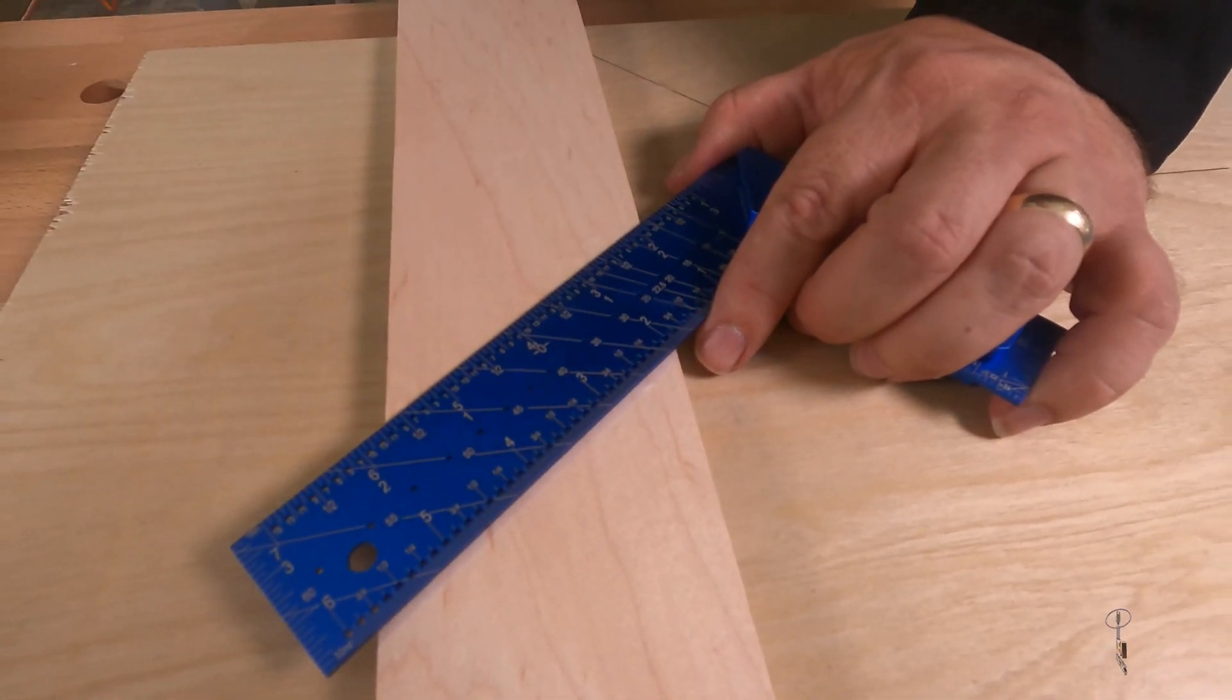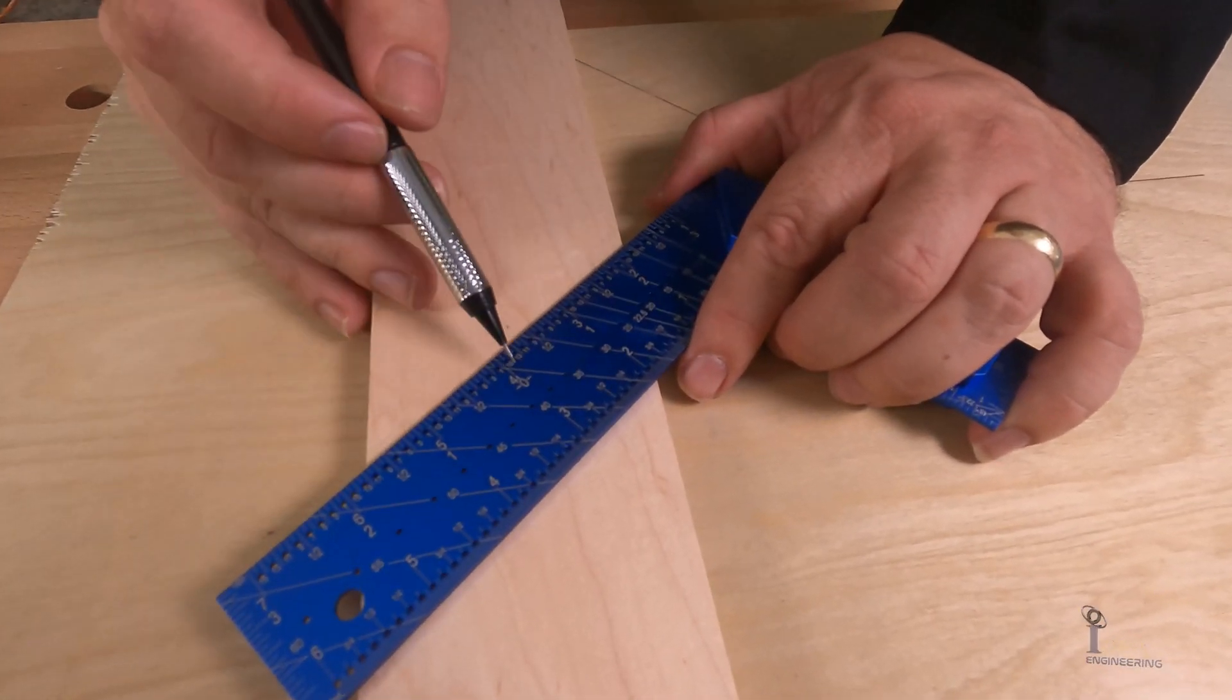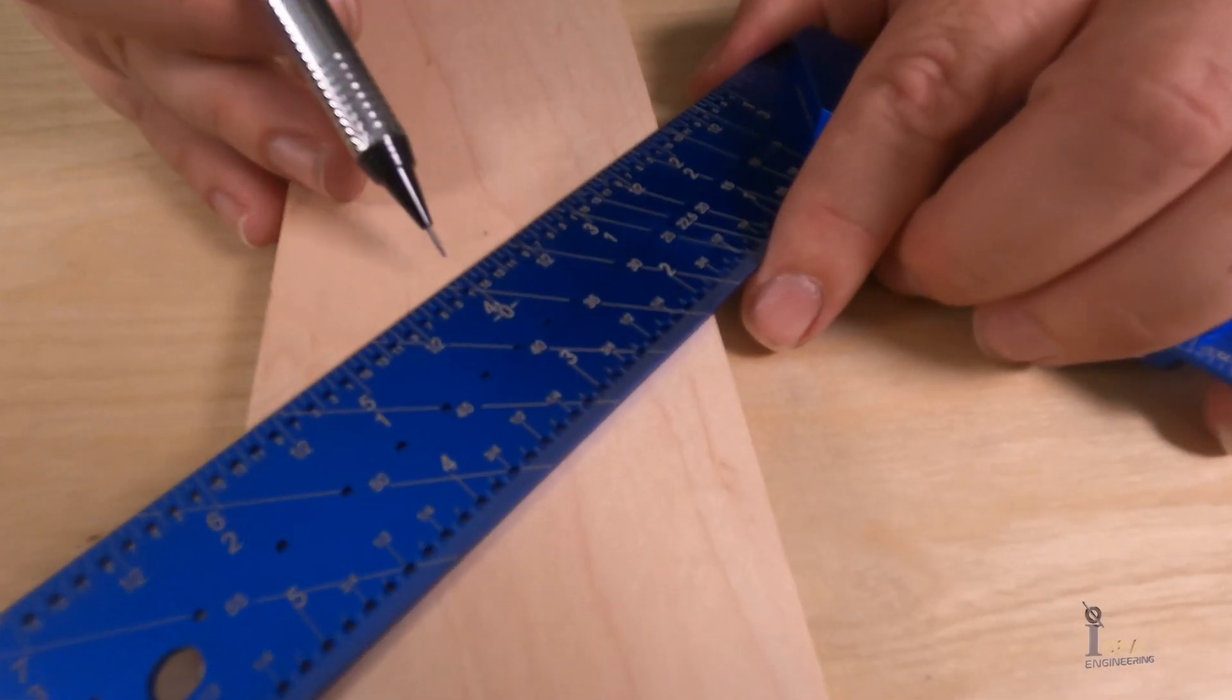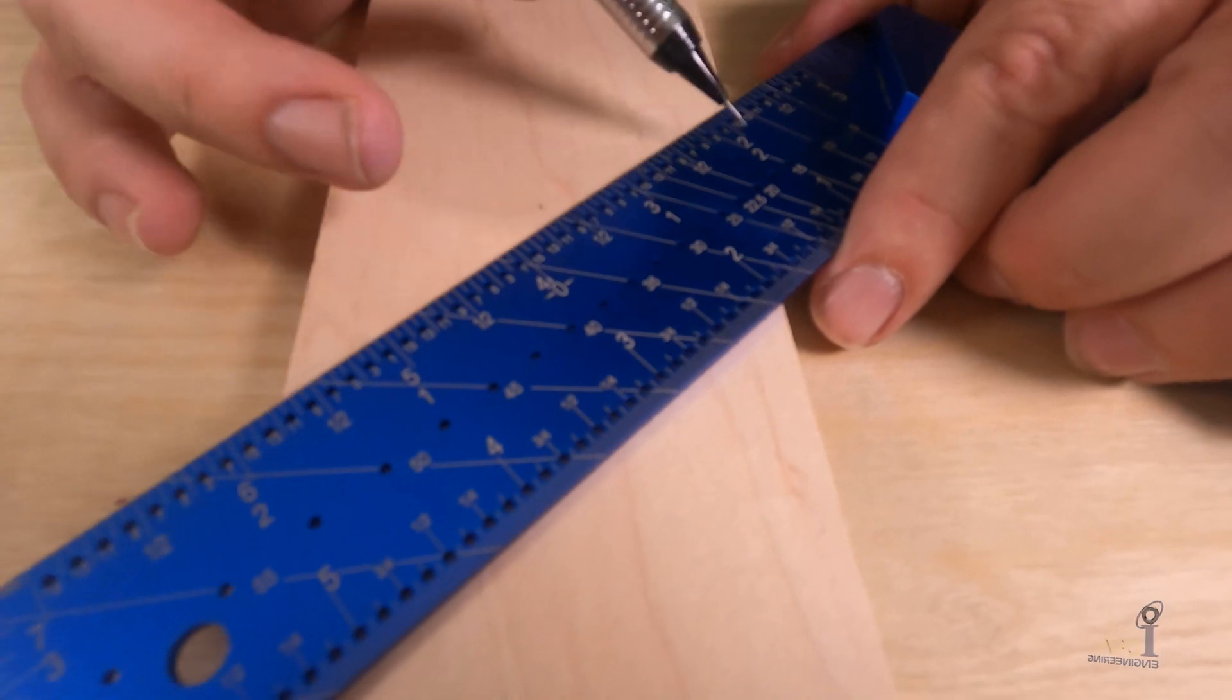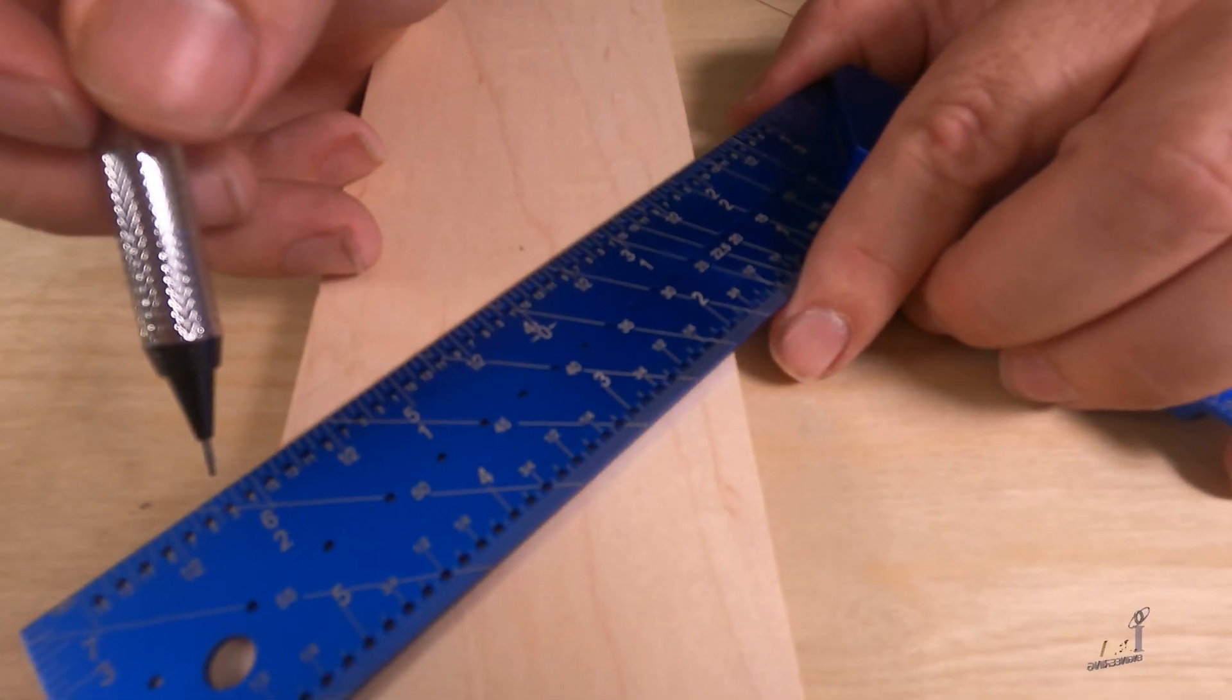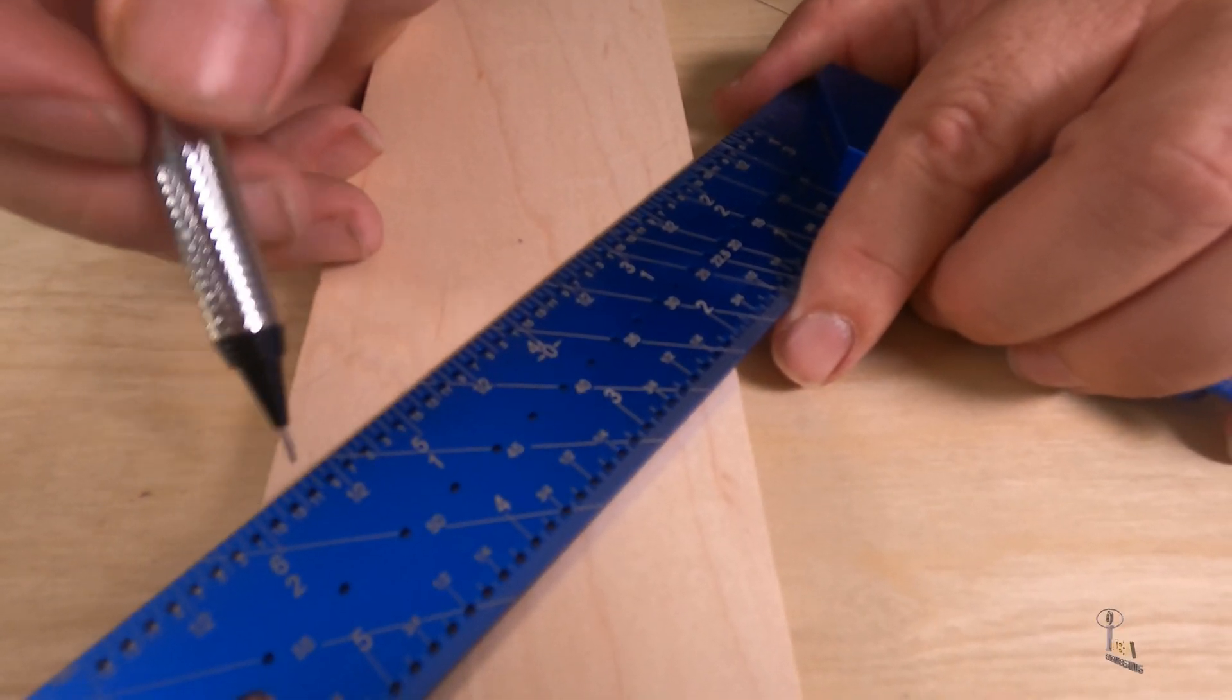To use the centering function of this square, this is zero, your center, right here. But you have to measure, make sure that the edges have the same number. So we're going to go with a two-inch on this one, so see the two there and the two here.